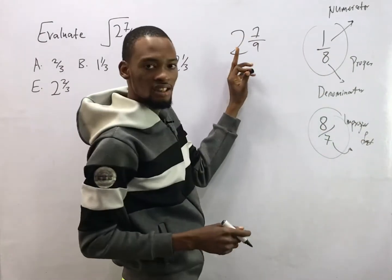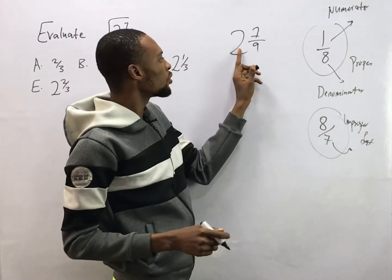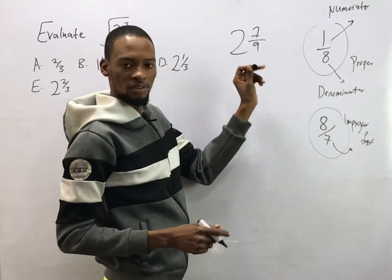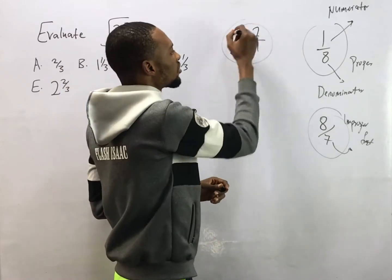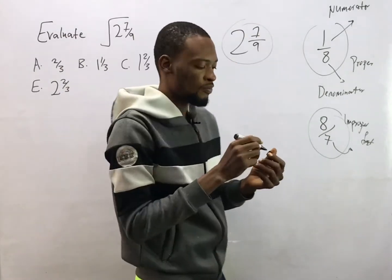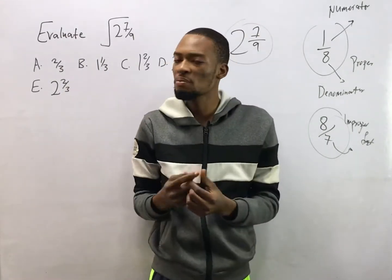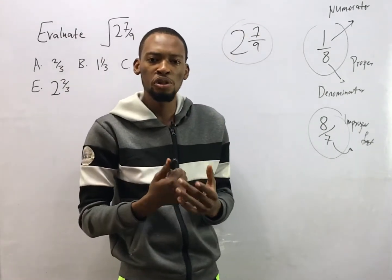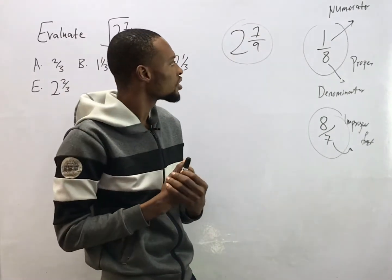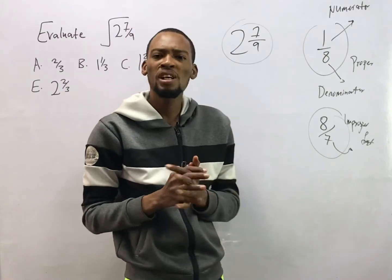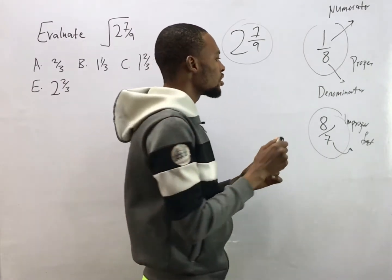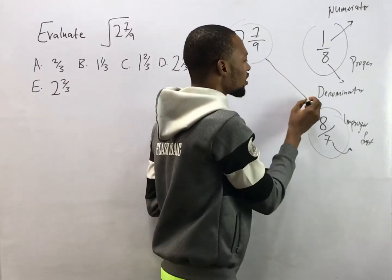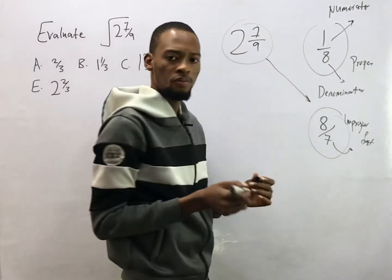Now once you have a whole number and a fraction together, it is called a mixed fraction. So if you are given a mixed fraction, you will be required to convert it to an improper fraction.